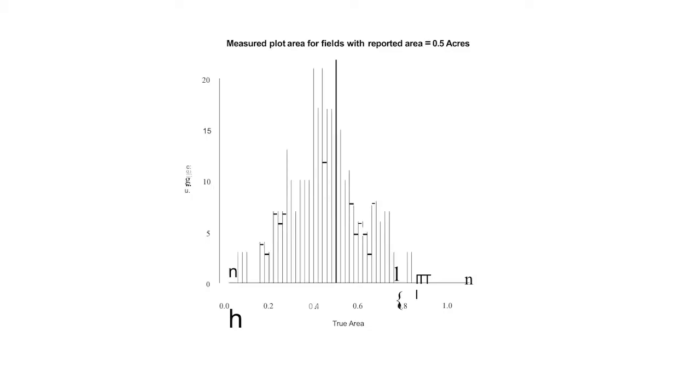When we try to get at productivity, we're really interested in output per unit of input, one of the key inputs being land. We ask about land areas and it's a very lumpy unit. We've gone out and actually walked the areas of individual fields after surveys, and found that of farmers who report half an acre, the actual area has a huge range of variation. So what we'd like to do is bring down the cost of acquiring data, improve the accuracy, and we feel that satellite technology is a very promising way of doing that.